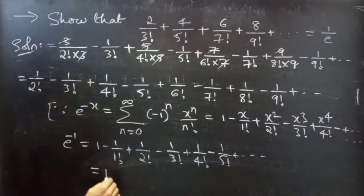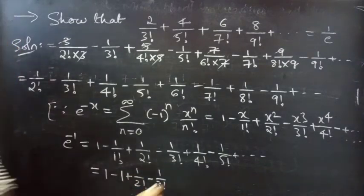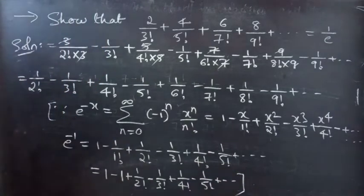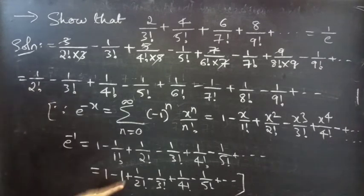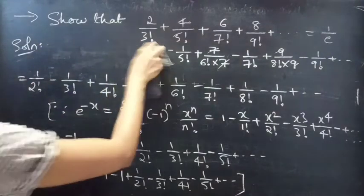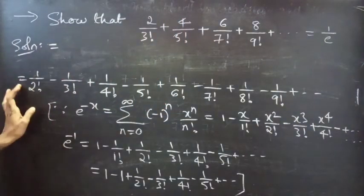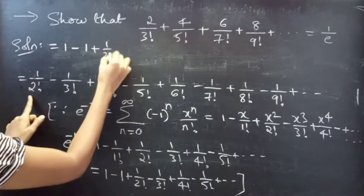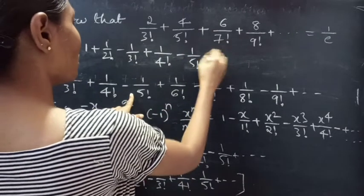This equals 1 - 1 + 1/2! - 1/3! + 1/4! - 1/5! + so on. In order to use this formula, we need to add and subtract 1, giving 1 - 1 + 1/2! - 1/3! + 1/4! - 1/5! + so on.